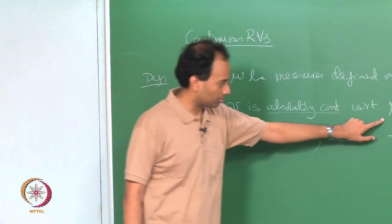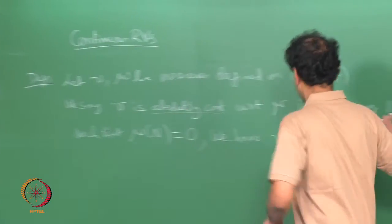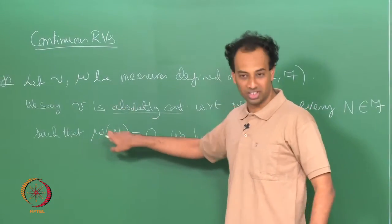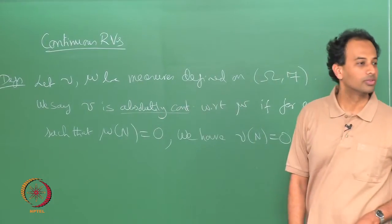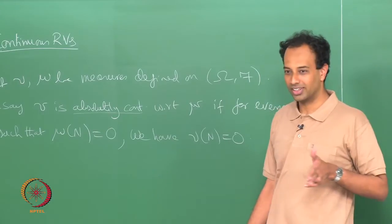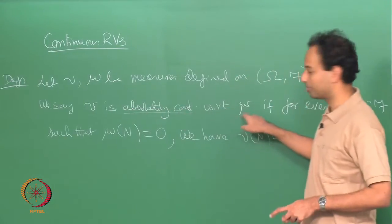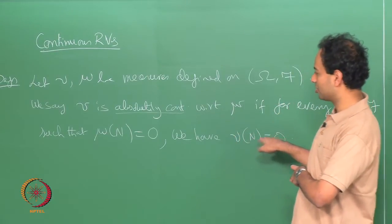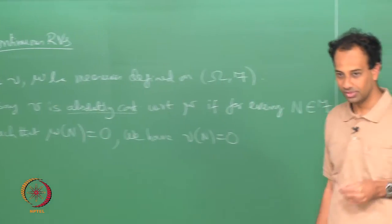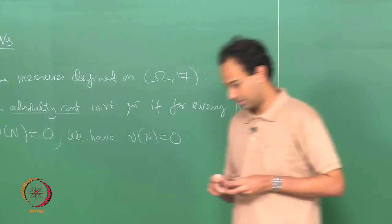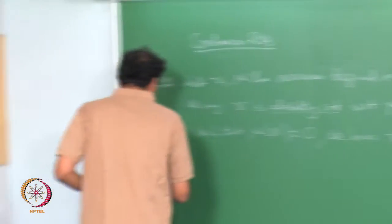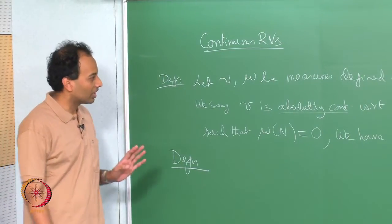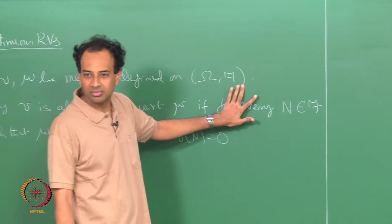We have a measurable space and two measures nu and mu on it. We say nu is absolutely continuous with respect to mu if for every mu-null set — every set which has mu-measure 0 — the nu-measure is also 0. The other way around does not necessarily hold. This is the notion of absolute continuity of measures.